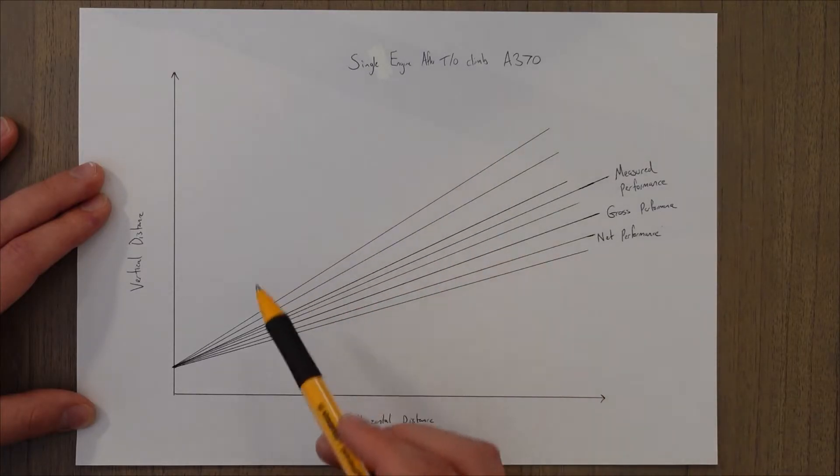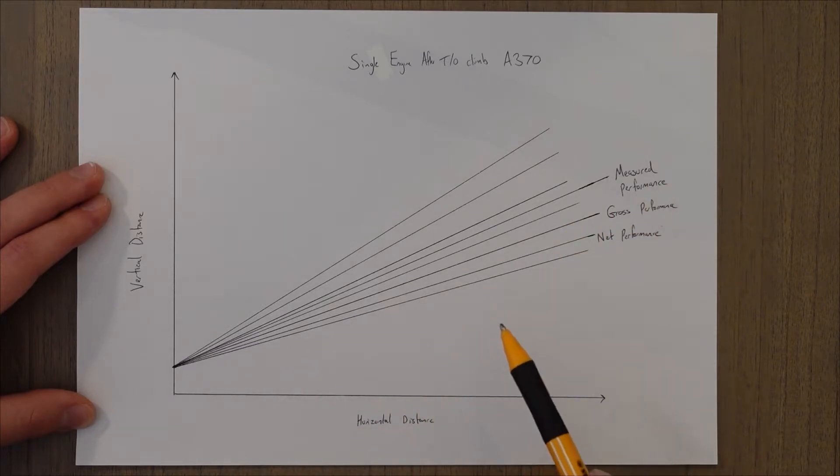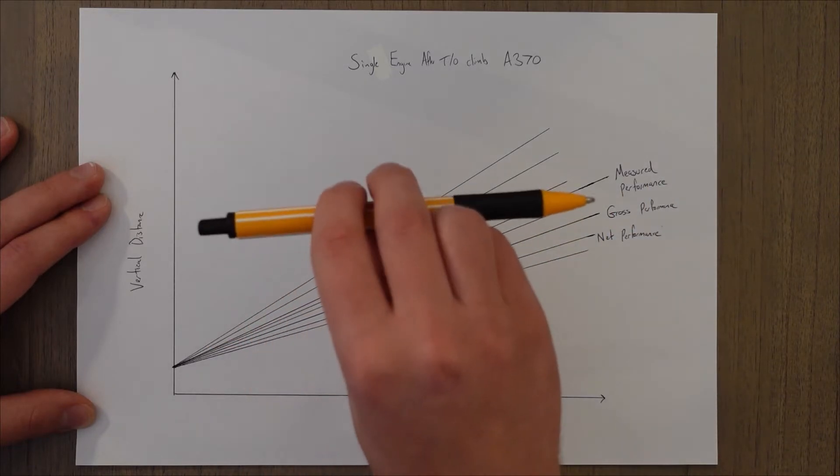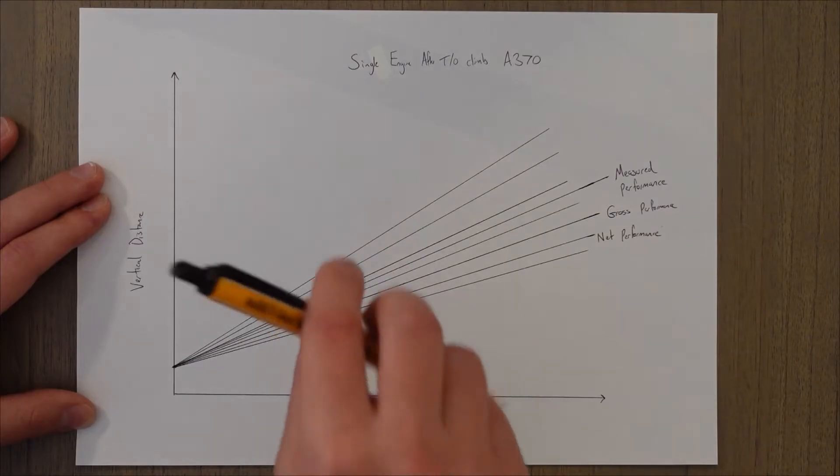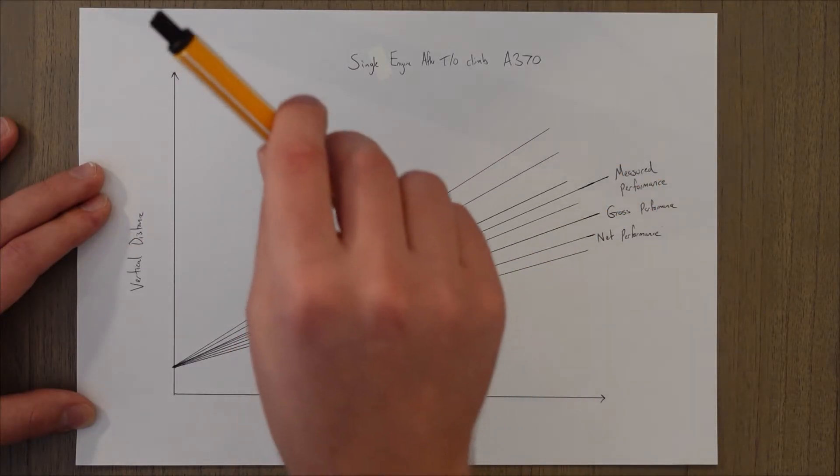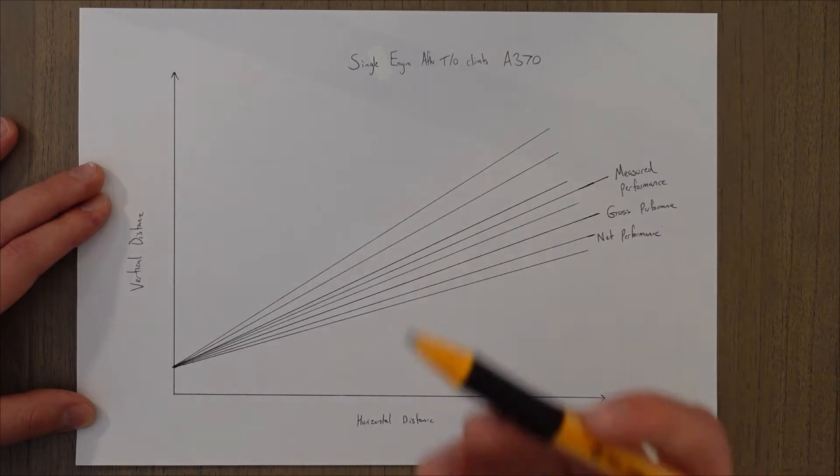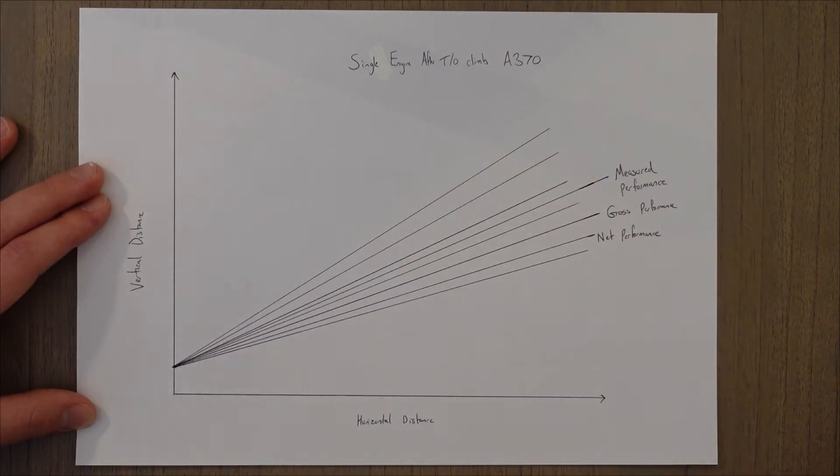For the single engine climb, the shallower line is obviously worse performance. We want to climb up a bit better. But if we were in descent, maybe the steeper line would be the worst performance because we don't want to descend or glide too steeply. We don't want to fall out of the sky; we want to glide a bit better.